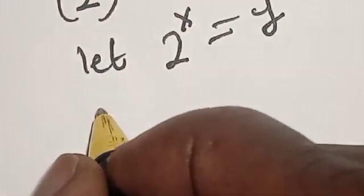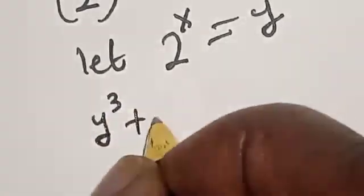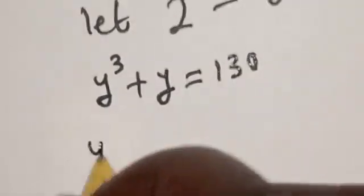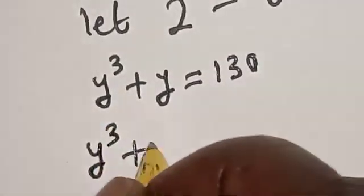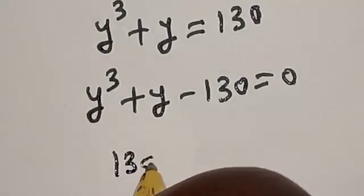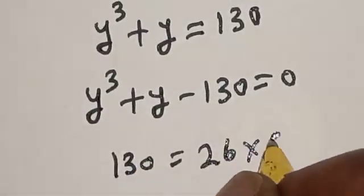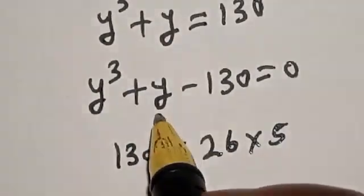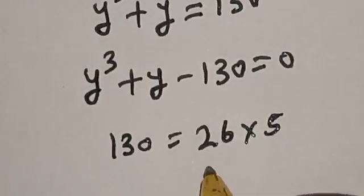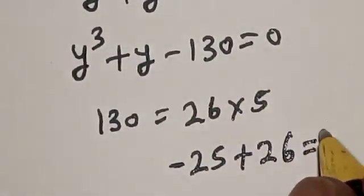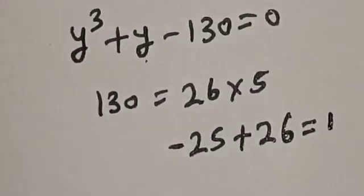We have y raised to power 3 plus y is equal to 130, which gives y cubed plus y minus 130 equals 0. Now 130 is equal to 26 times 5, and we can see that the coefficient of y here is 1. So we need to manipulate this — we write minus 25 plus 26, which gives 1 for the coefficient of y.